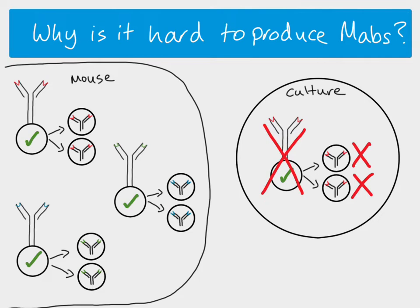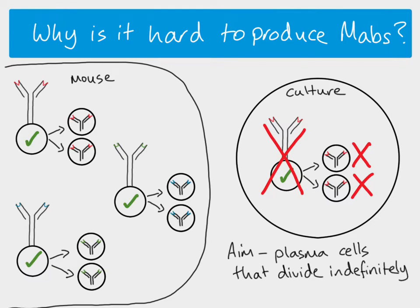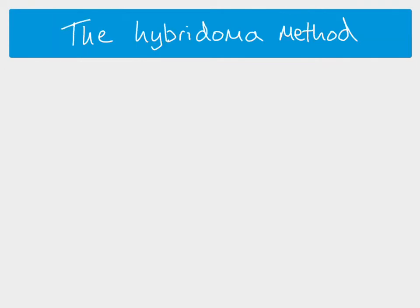This is why it's difficult to produce MABs. What we're trying to do is get the plasma cells we want — to produce our monoclonal antibodies — but make them able to divide indefinitely, so we can extract them from the mouse, continue to divide them, and have an infinite supply of antibodies. Luckily we can do it, and this is called the hybridoma method.